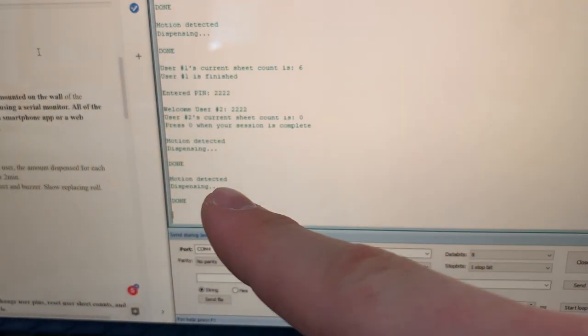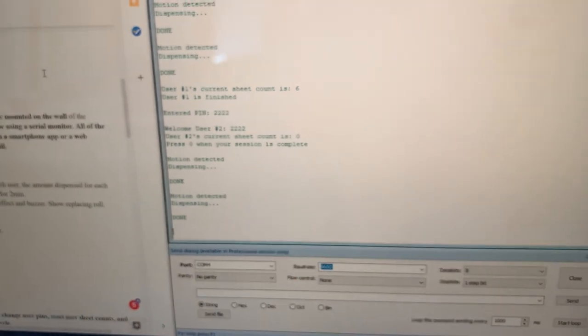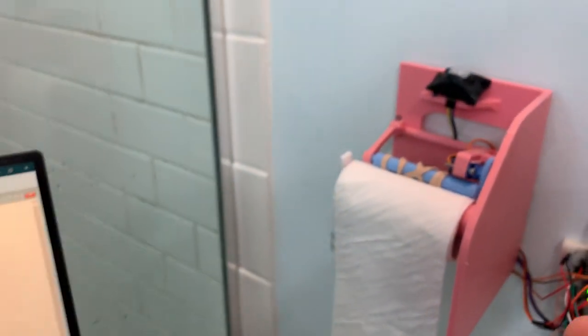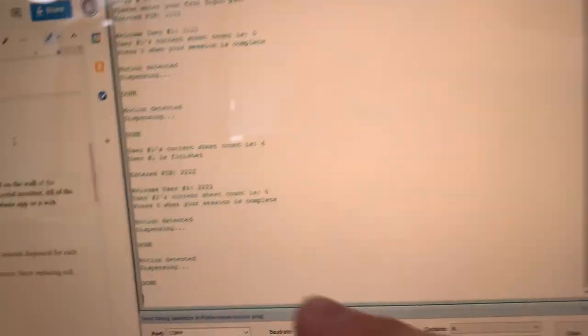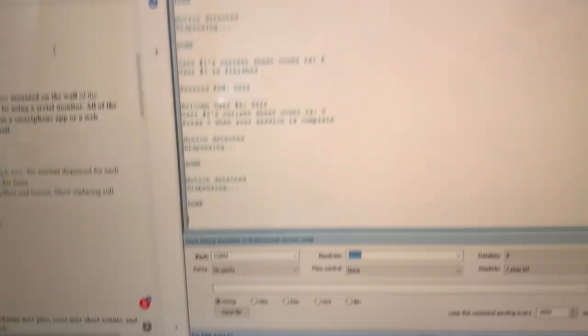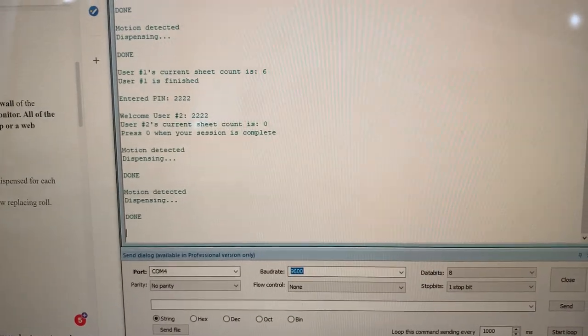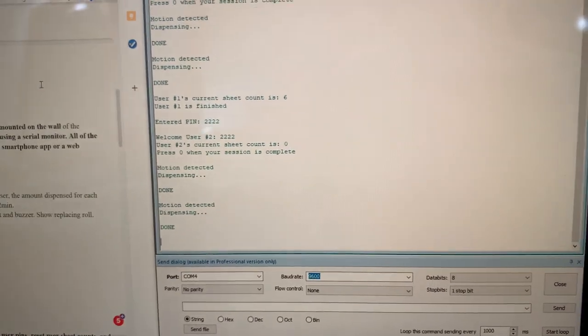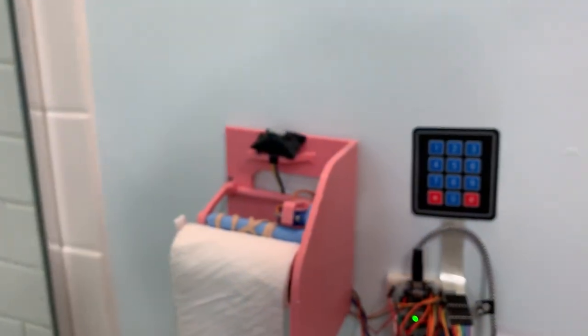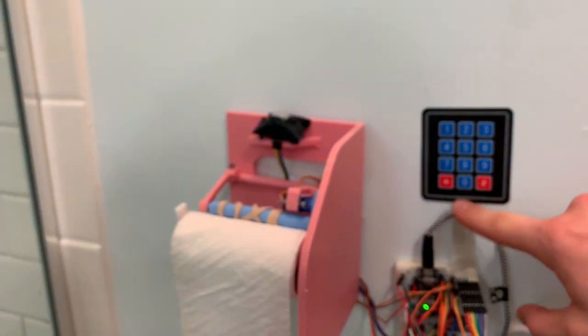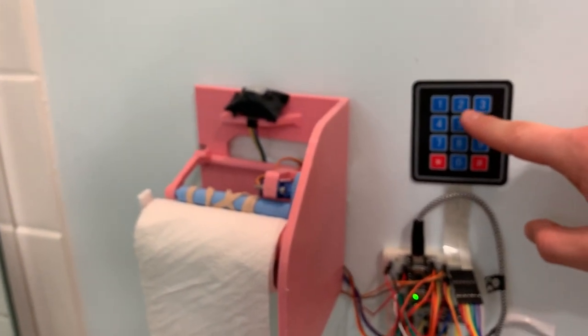Let's go to user two, which is four twos. Welcome user two, your current sheet total is zero. Let's use user two's profile, dispensing. It's shown that it's dispensing. There's also a timeout: if I just leave this in this user profile without exiting manually, after two minutes it times out and goes back to the main function where a new PIN must be entered.